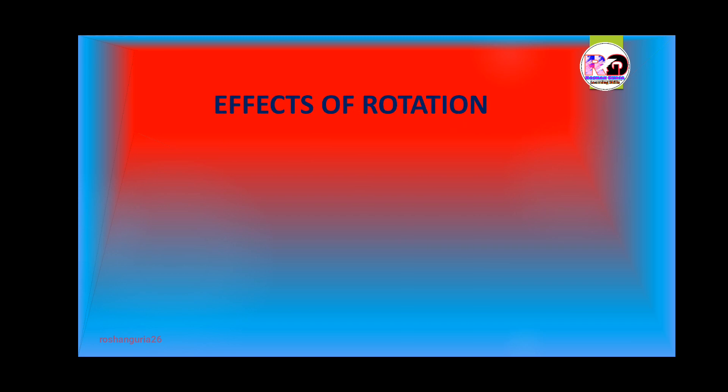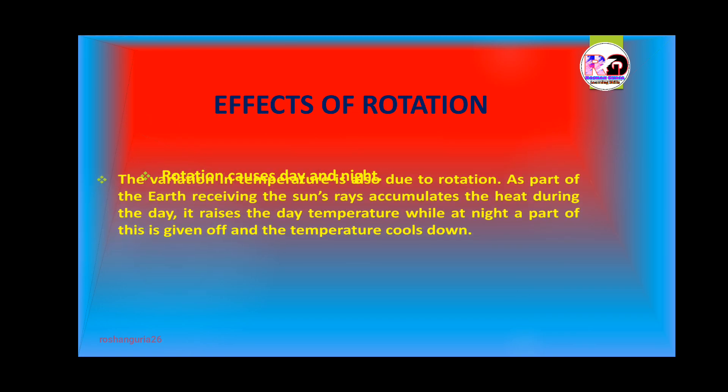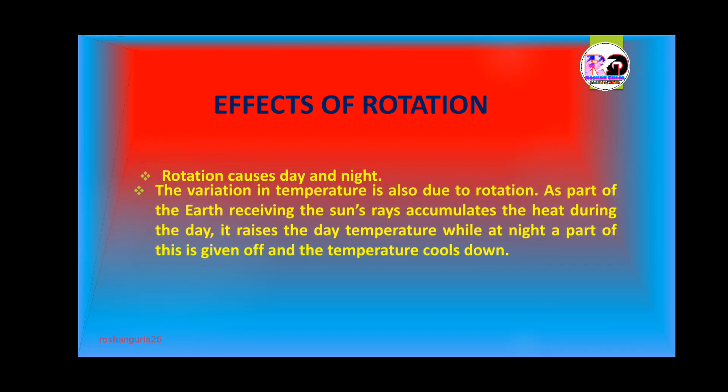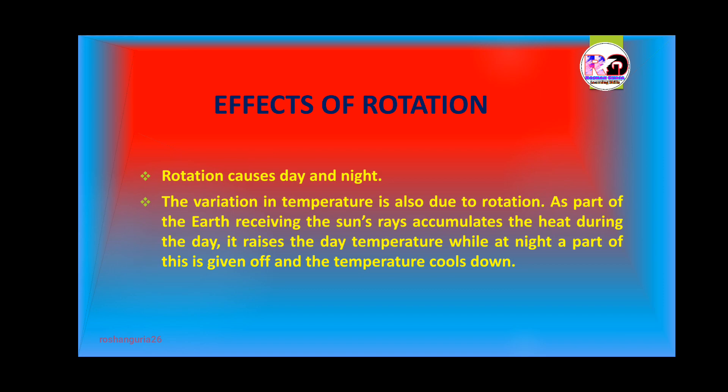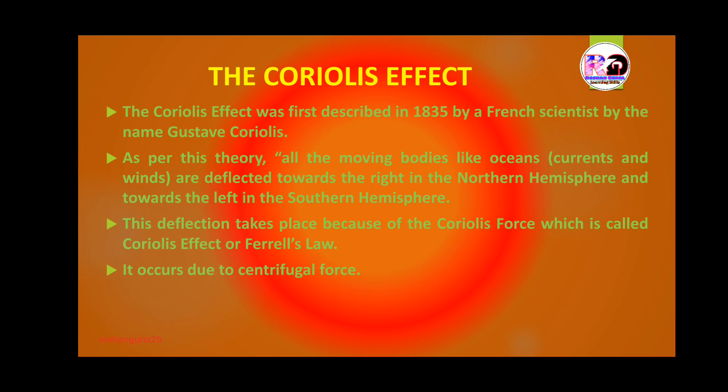Now let's look at the effects of rotation. The first effect is that rotation causes day and night. The second effect is that variation in temperature is also due to rotation — we do not receive equal amounts of temperature on the earth's surface. It varies because the part of the earth receiving the sun's rays accumulates heat during the day, raising the temperature, while at night part of this heat is given off and the temperature cools down.